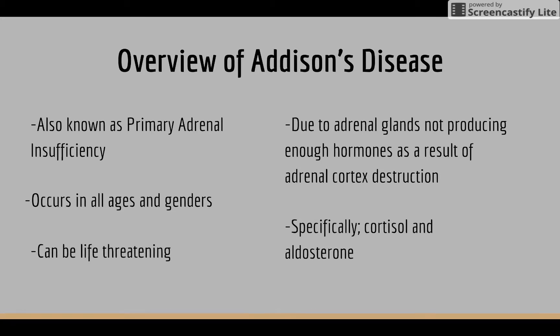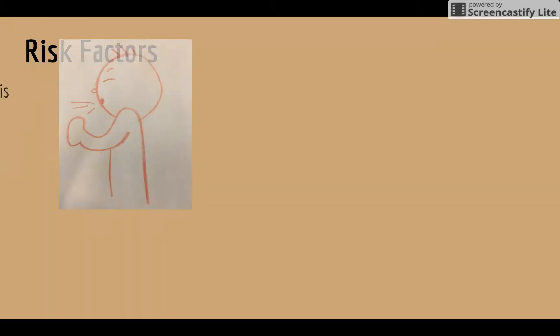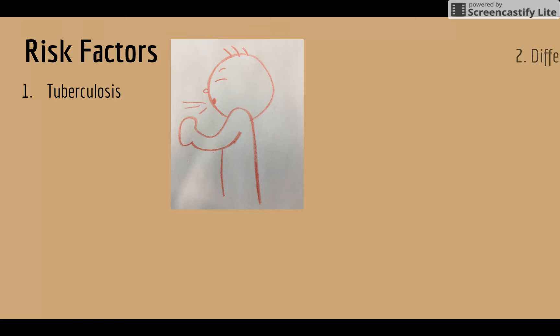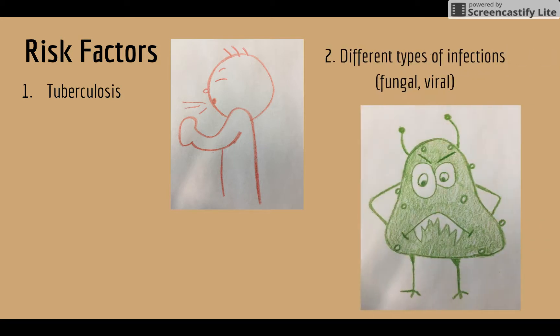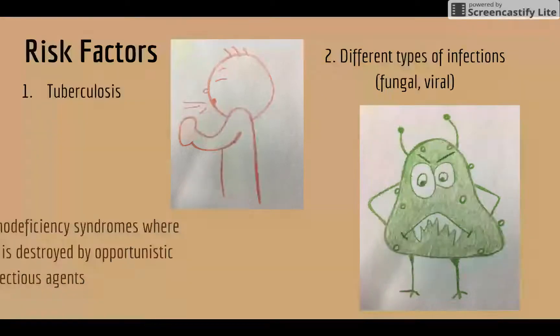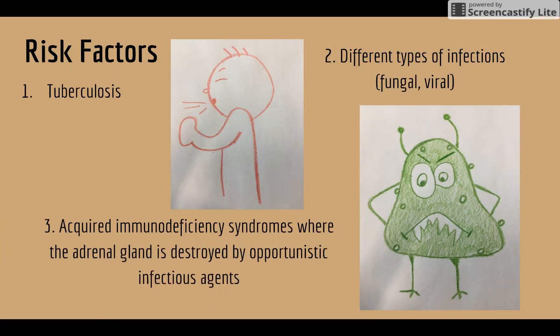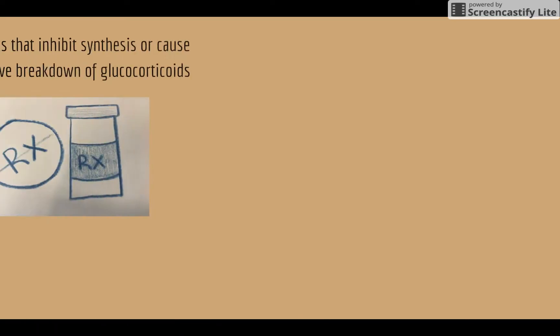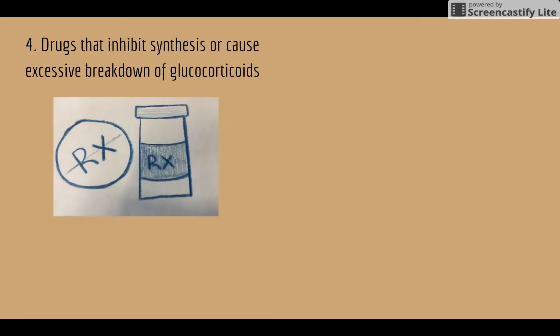It can be life-threatening. Risk factors include current or previous infection of tuberculosis, fungal or viral infections, and acquired immunodeficiency syndromes where the adrenal glands are destroyed by opportunistic infectious agents. Drugs that inhibit synthesis or cause excessive breakdown of glucocorticoids are also a risk factor.